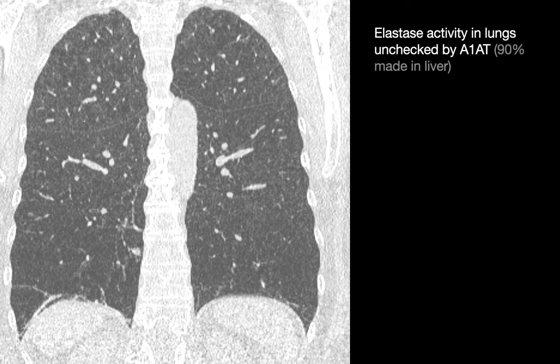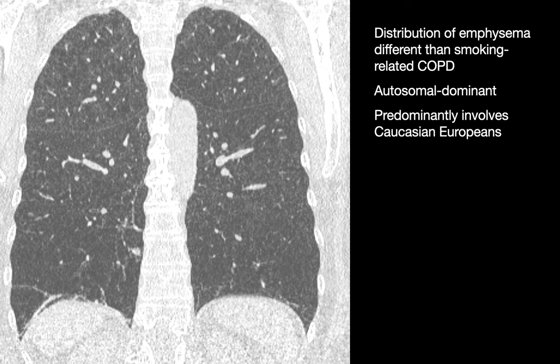In addition, excess elastase stimulates macrophages to release chemoattractants, recruiting more neutrophils to the lung. The distribution of emphysema in alpha-1 antitrypsin deficiency differs from smoking-related emphysema, which shows an upper lung predominant pattern. Finally, alpha-1 antitrypsin deficiency is an autosomal dominant disorder and predominantly affects patients of Caucasian European descent.